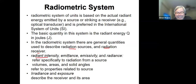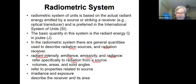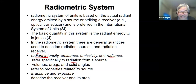You have radiant intensity, emittance, emissivity, and radiance. These refer specifically to radiation from a source — in terms of volume, area, and solid angles — relating to the properties of the source.